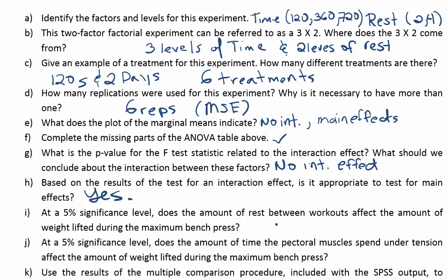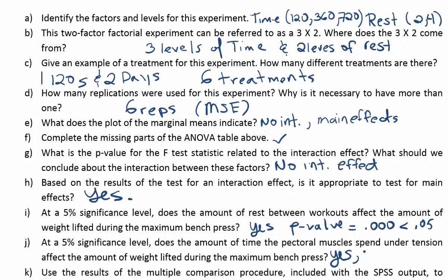For part I, at a 5% significance level, does the amount of rest between workouts affect maximum bench press? Yes — the p-value is 0.000, which is less than 5%, so we reject the null hypothesis of no difference between rest times and conclude there is a significant difference. For part J, does the amount of time the pectoral muscles spend under tension affect maximum bench press? Again, yes — the p-value is 0.000, less than 0.05, so tension time is also significant.